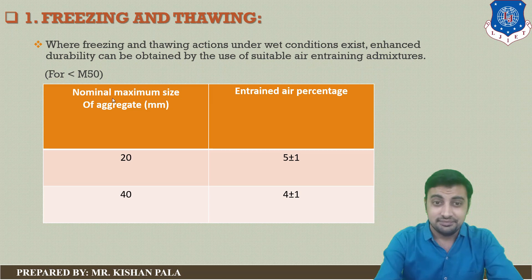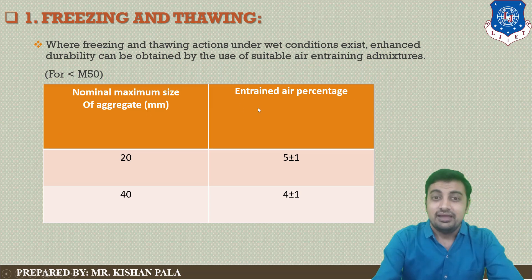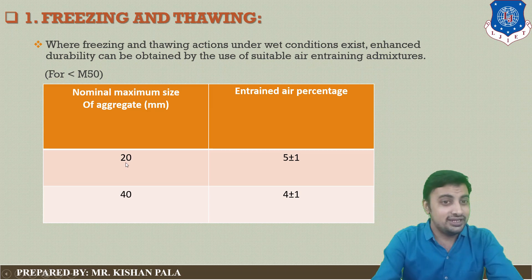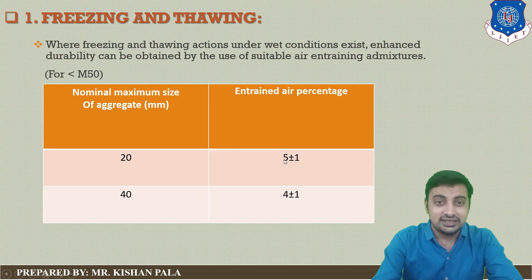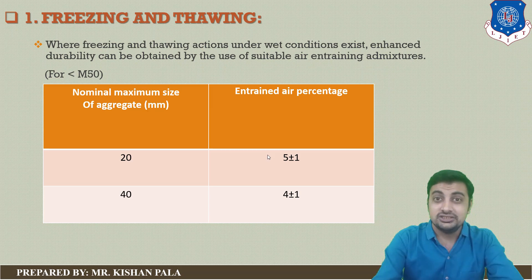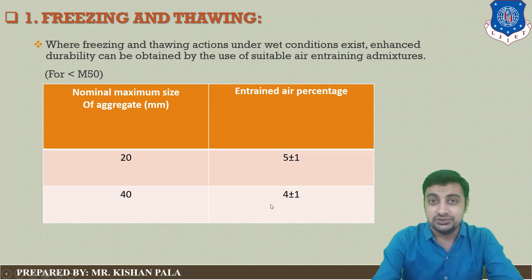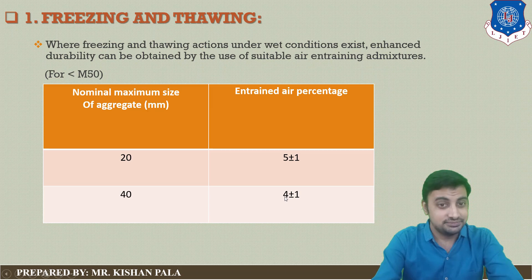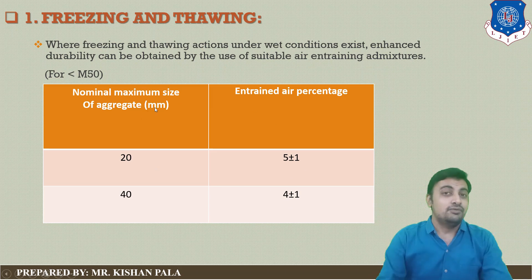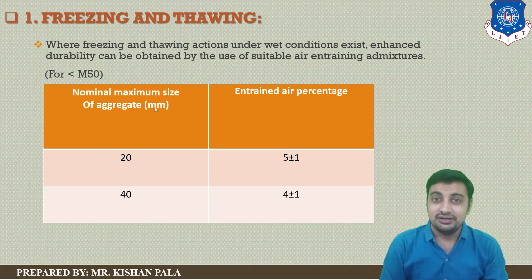The table on screen shows the nominal maximum size of aggregate and the required entrained air percentage. For example, if you are using 20 mm nominal size aggregate, you should use 5 ± 1% entrained air. For 40 mm size aggregate, you should use 4 ± 1%. This table applies specifically to less than M50 grade concrete.